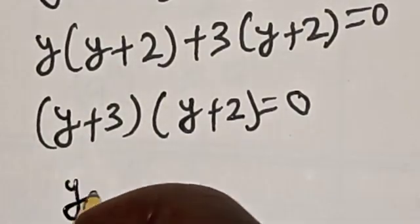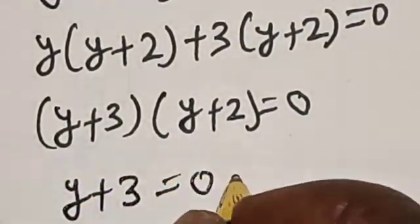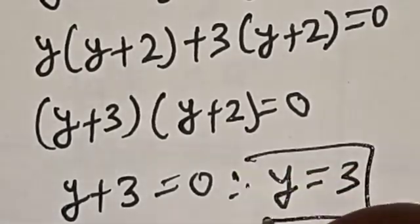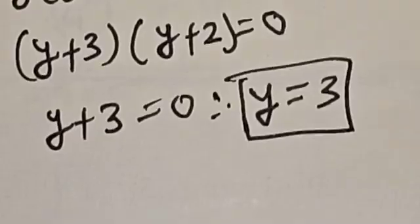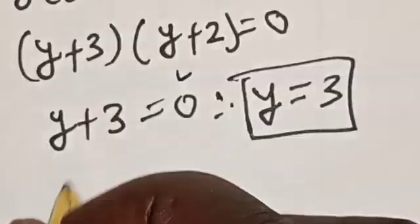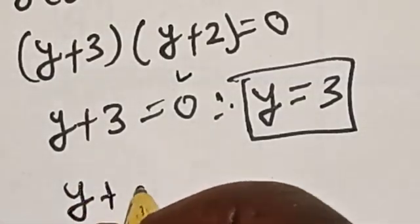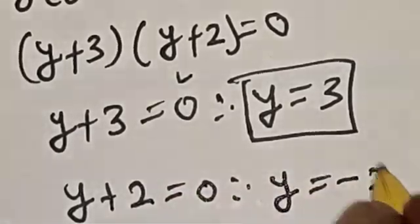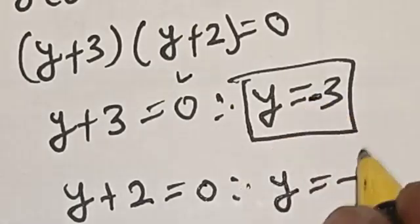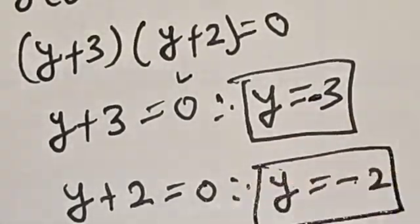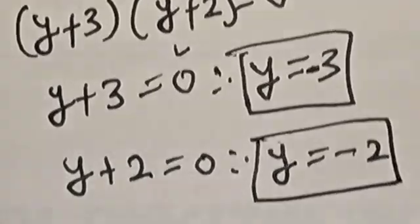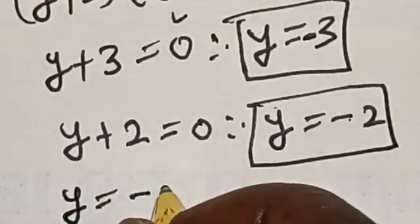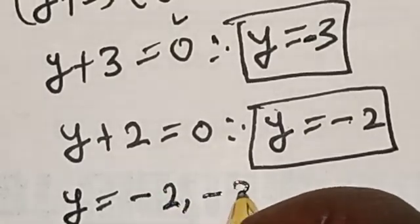So there are two cases here. Case 1: y plus 3 is equal to 0, therefore y is equal to minus 3. Case 2: y plus 2 is equal to 0, therefore y is equal to minus 2. So the values of y are y equals minus 2 and y equals minus 3.